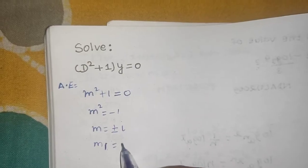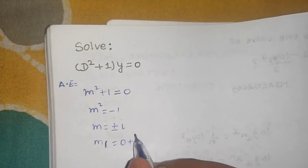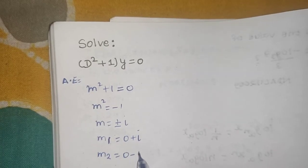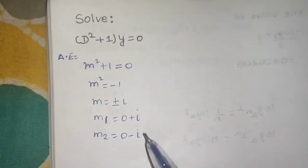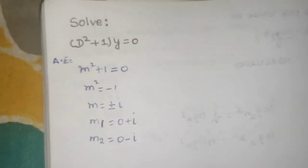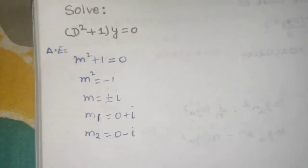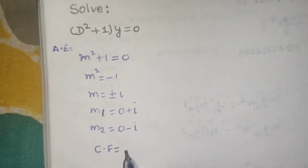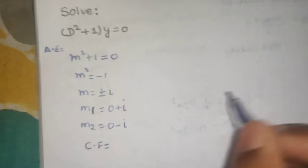Now these two are the complex roots. So how to write the complementary function for complex root? I have already told you the method.